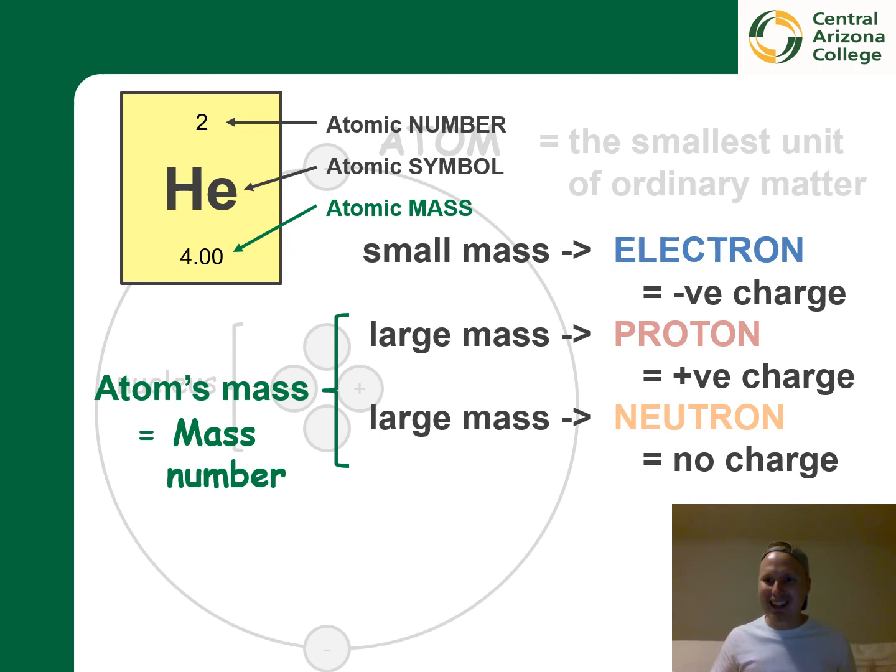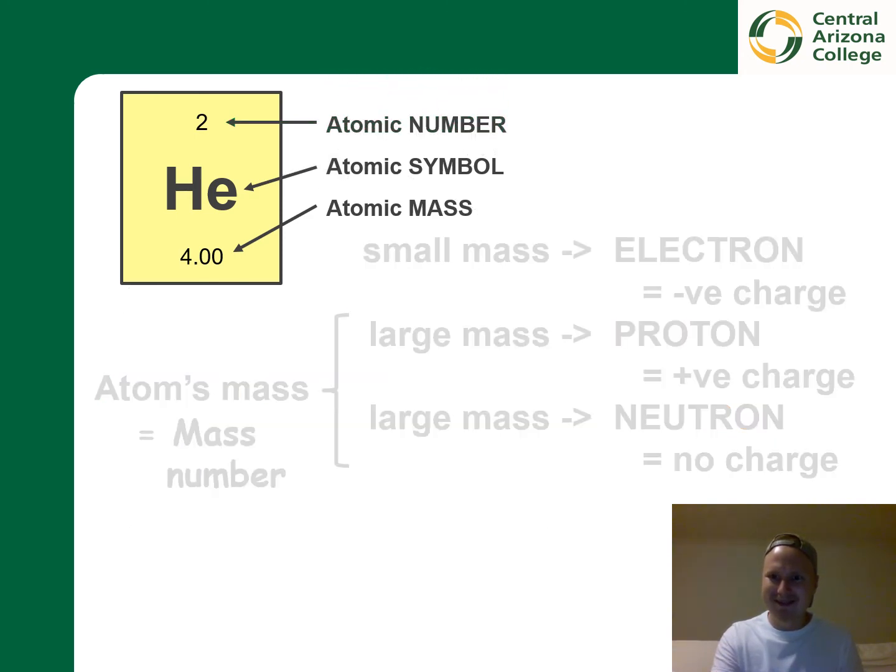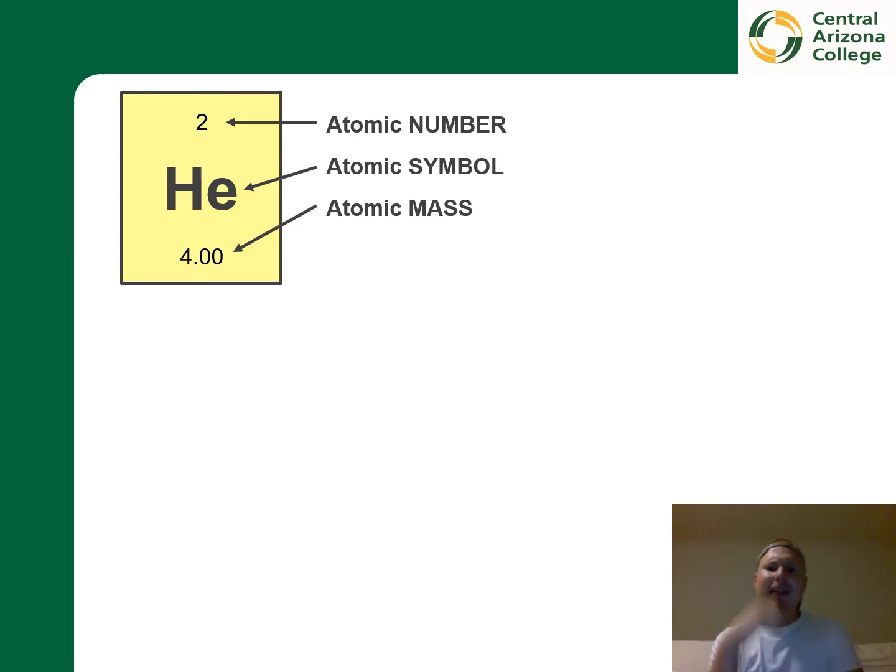And this is known as the mass number of an atom. Interestingly, you can often find this in a periodic table. And you will also find the atomic number, which tells us the number of protons. So see how we are already learning to read the periodic table of elements.